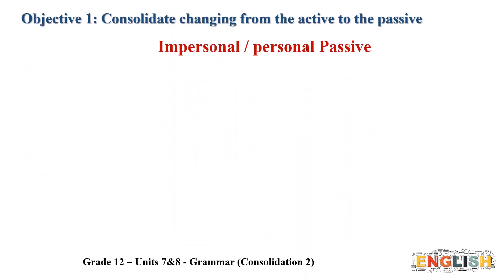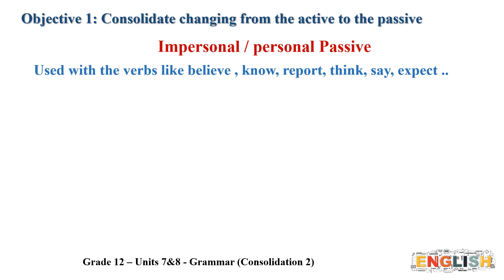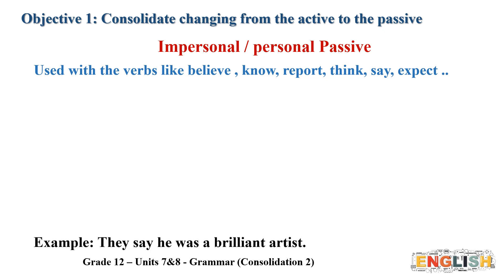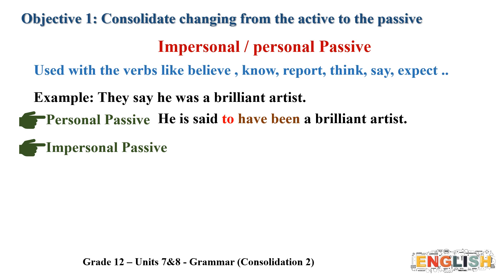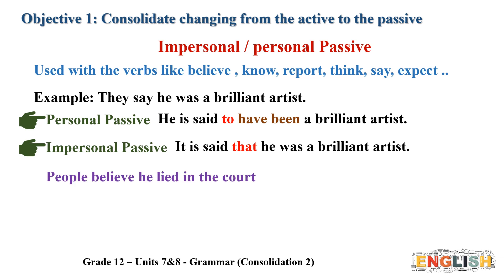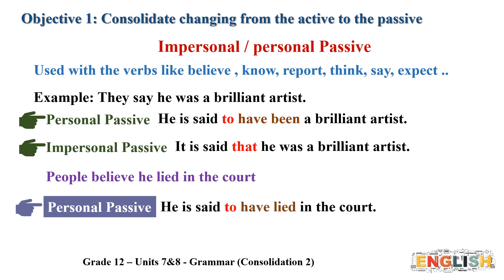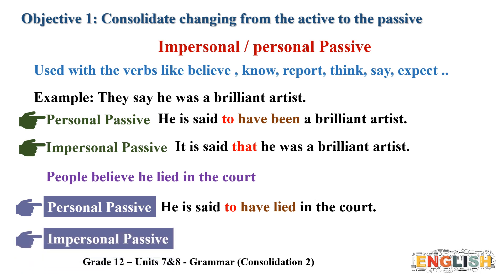Now we'll look at impersonal and personal passive. It is used with verbs like believe, know, report, think, say, and expect. For example, the personal passive is: 'He is said to have been a brilliant artist' — use 'have been' instead of 'was.' The impersonal passive is: 'It is said that he was a brilliant artist.' Now pause the video and write the personal passive for the given sentence. The answer is: 'He is said to have lived in the cold.' The impersonal passive is: 'It is said that he lived in the cold.'